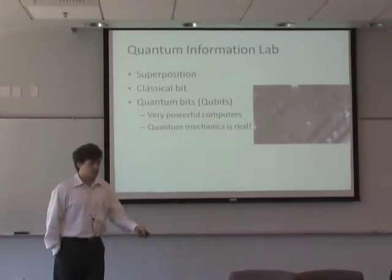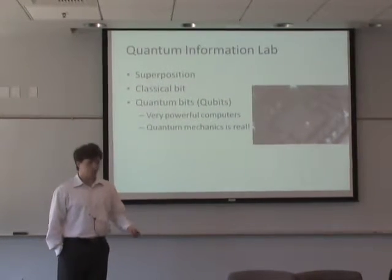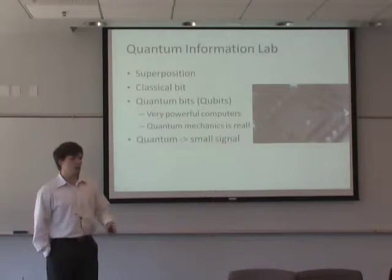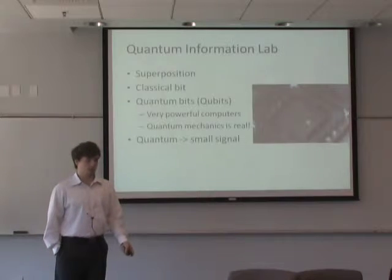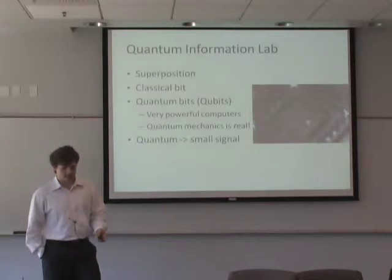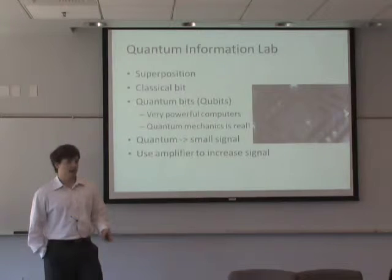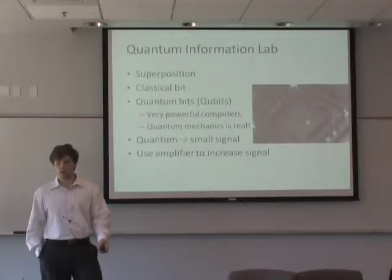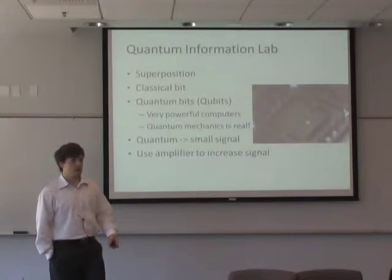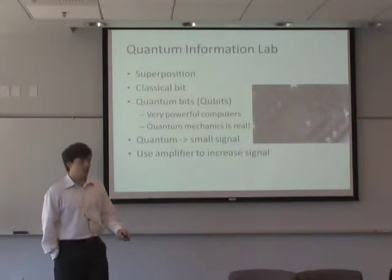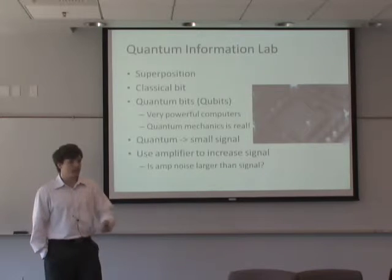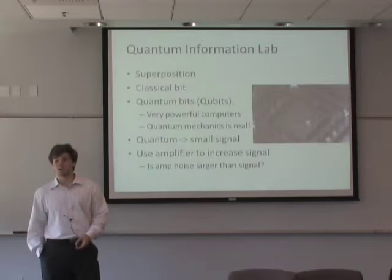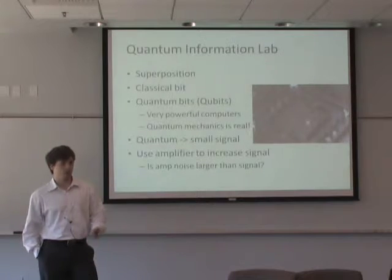Moving into the signals coming from our qubits, you may suspect the signal is very small — because quantum generally means small signal. To actually read this signal, you need to amplify it, so we use an amplifier to increase the signal. But the problem is this amplifier will have something called noise, and if that noise is larger than the signal, it will bury it. So it's important to know: is the noise bigger than our signal? This is what my summer's research has been — noise measurement.